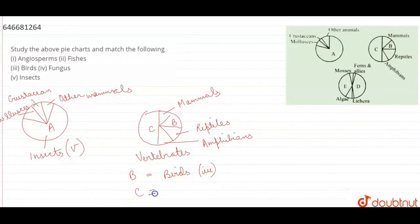And C is equal to fishes. That is option 2. And the last, third pie chart is for plants. That is D and E.